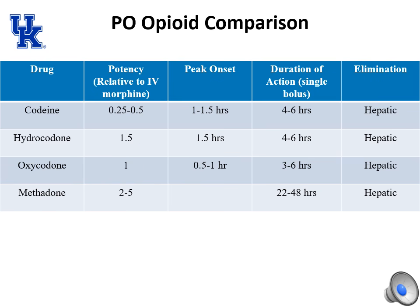A similar comparison chart exists for PO opioids, including peak onset times, duration of action, elimination, and potency relative to IV morphine. PO opioids have longer onset and duration compared to IV opioids. Elimination is hepatic for all of these PO opioids. Codeine is a weak opioid compared to morphine; oxycodone and hydrocodone are roughly equivalent to morphine; methadone is a stronger opioid compared to morphine.